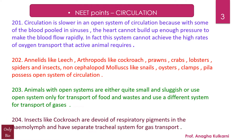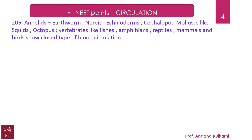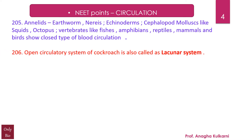Insects like cockroach are devoid of respiratory pigments in the hemolymph and have a separate tracheal system for gas transport. Annelids like earthworm and Neris, echinoderms, cephalopod molluscs like squids and octopus, and vertebrates like fishes, amphibians, reptiles, mammals, and birds show a closed type of blood circulation. The open circulatory system of cockroach is also called the lacunar system.